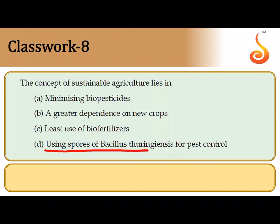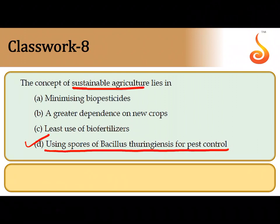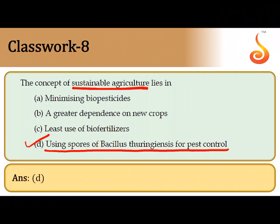The eighth question says the concept of sustainable agriculture lies in using the spores of Bacillus thuringiensis for pest control. Bacillus thuringiensis is a bacterium — you use its spores to control caterpillar pests, making it a bio-control agent. This is sustainable agriculture because it is narrow-range and species-specific and does not kill beneficial insects. The correct answer is the last option.